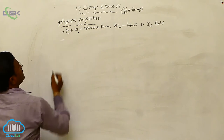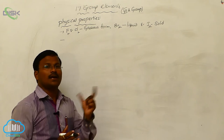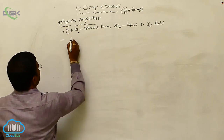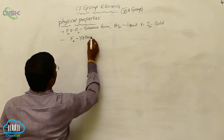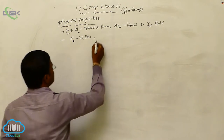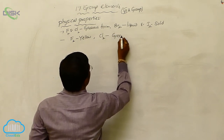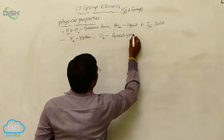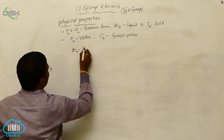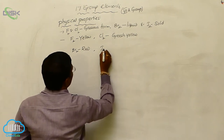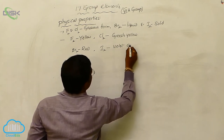All these halogen elements will have different colors. For example, fluorine exists as a yellow color gas, whereas chlorine exists as a greenish yellow color gas, whereas bromine exists as a red color liquid, and iodine is available as a violet color solid.